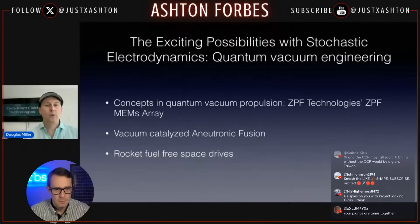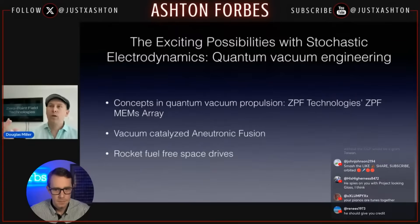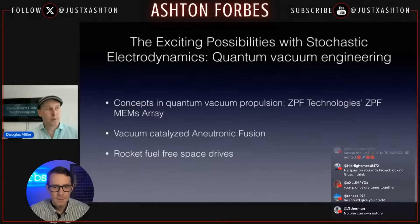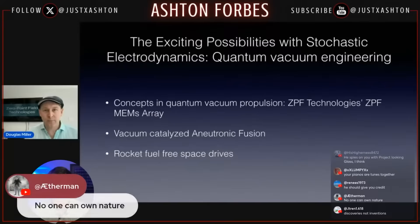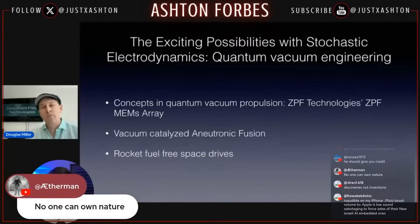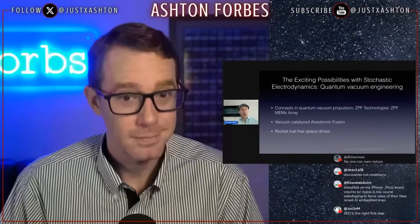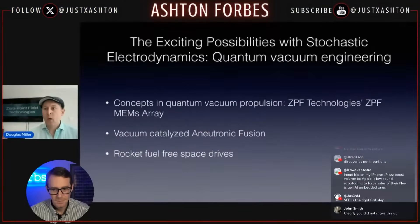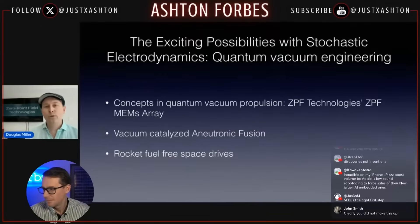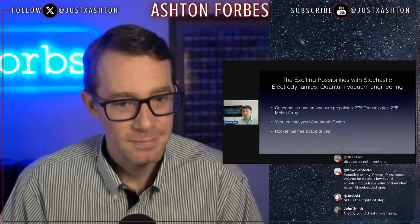When it fuses, it creates alpha particles — two protons, two neutrons, a helium-4 basically — that can be harvested with MHD coils at a nearly 95% efficiency rate directly into electricity. That's how they're going to power Microsoft's AI data centers. You have power in, you have power out. Right now in the process they're probably right about breakeven. You need more power out than power in for this to work. That's called a Q factor — Q equals one is breakeven, Q equals two is twice the power out than power in, Q equals three is three times.